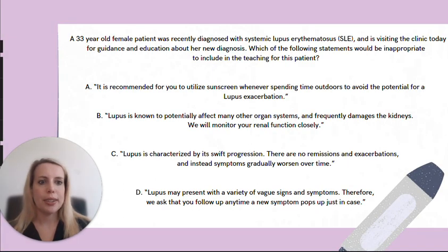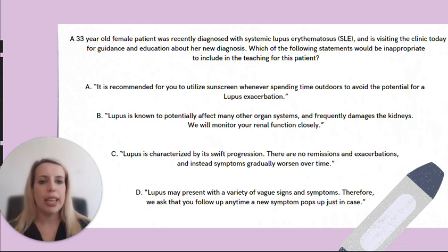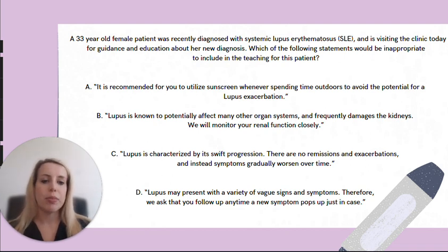We have a 33-year-old female patient who was recently diagnosed with systemic lupus erythematosus, or SLE, and is visiting the clinic today for guidance and education about her new diagnosis. Which of the following statements would be inappropriate to include in teaching for this patient? A: It's recommended for you to utilize sunscreen whenever spending time outdoors to avoid the potential for a lupus exacerbation. B: Lupus is known to potentially affect many other organ systems and frequently damages the kidneys — we will monitor your renal function closely. C: Lupus is characterized by its swift progression; there are no remissions and exacerbations, and instead symptoms gradually worsen over time. D: Lupus may present with a wide variety of vague symptoms and signs; therefore, we ask that you follow up anytime a new symptom pops up just in case.